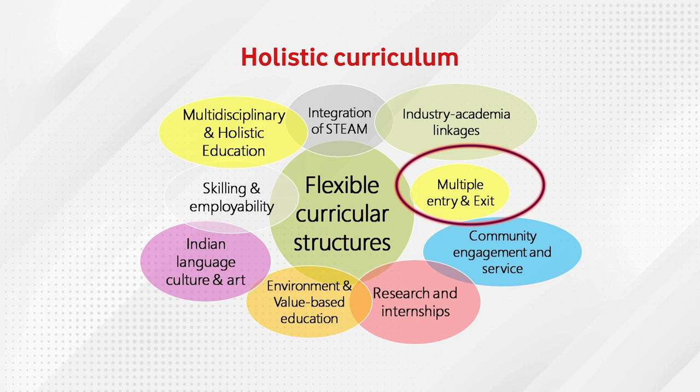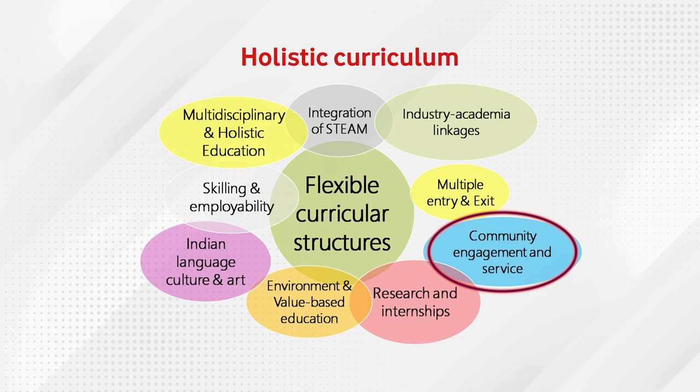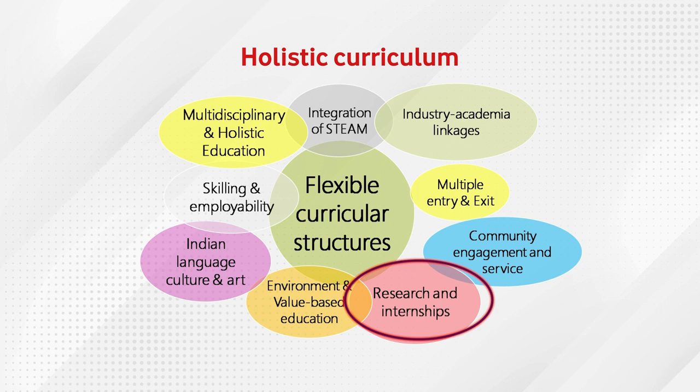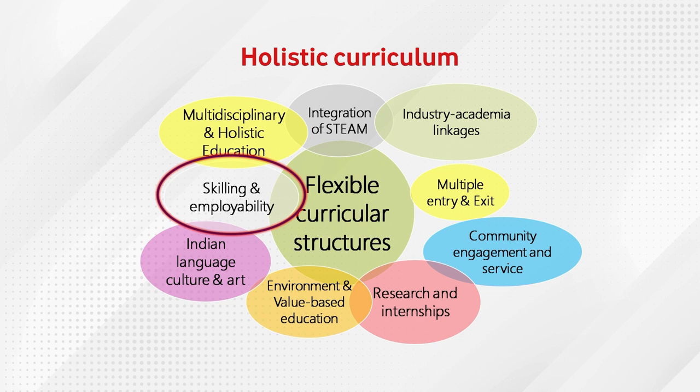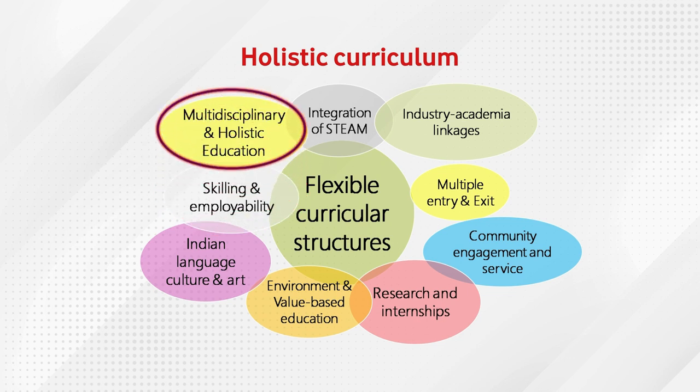Community engagement and service form a compulsory part of the curriculum. Research and internship carry almost 40 credits equivalent in the four-year undergraduate program. Other components include environment and value-based education, Indian language, culture and art, skilling and employability, and multidisciplinary and holistic education — meaning students will be allowed to take courses from other disciplines based on their requirement, needs, and choice. Those credits count towards one's own degree. Multidisciplinary will be increased through development of values, attitude, happiness skills, and skill-based courses that expand employability by taking courses from other disciplines.